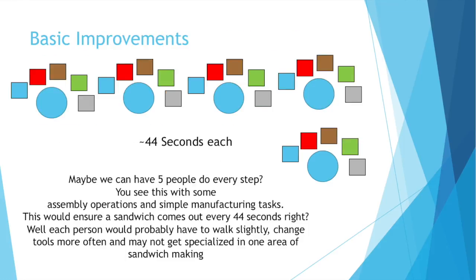So for this example, what improvements can we make? Our bottleneck occurred because five people each performed their own task taking different amounts of time. One idea: have five people but each person does every single task. That way they're never waiting on someone before them, and you'd ensure a sandwich comes out every 44 seconds. But not exactly — there's walking between stations, picking up and putting down tools. For a PB&J these transitions are quick, but in more complex manufacturing these transitions take time, skill, and training, and they add up.